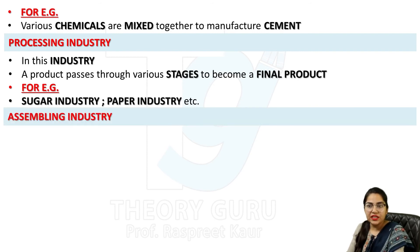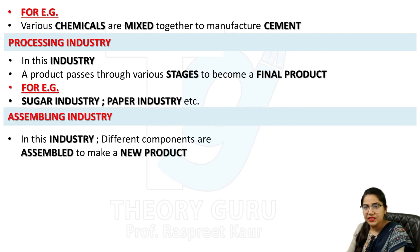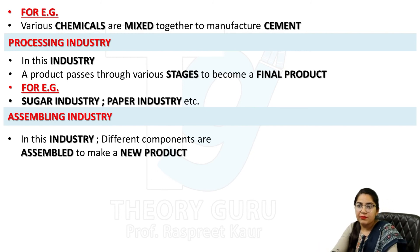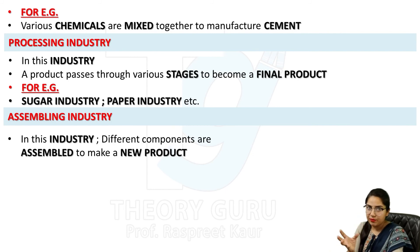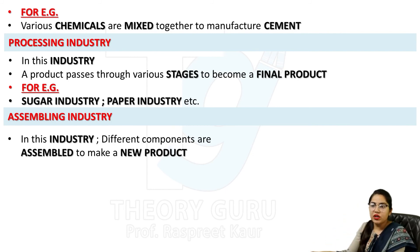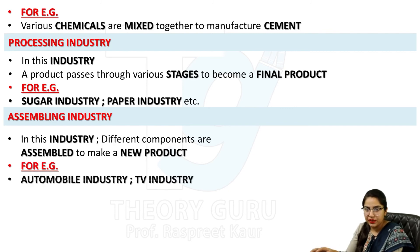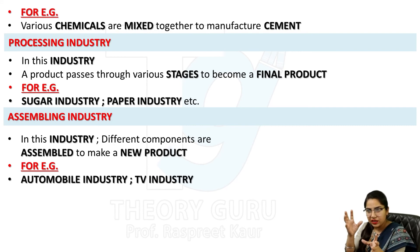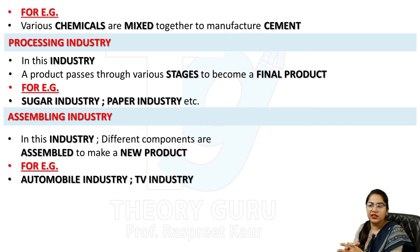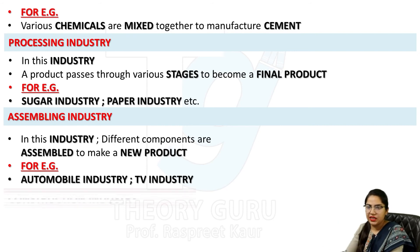The fourth type is assembling industry. In assembling industry, different components are assembled to make a new product. For example, in the automobile industry, a car is made by assembling different components together to create a finished product. Similarly, in the TV industry, different components are assembled to convert them into a TV.